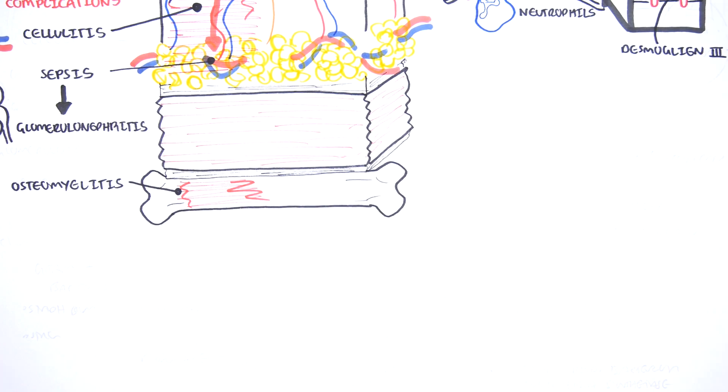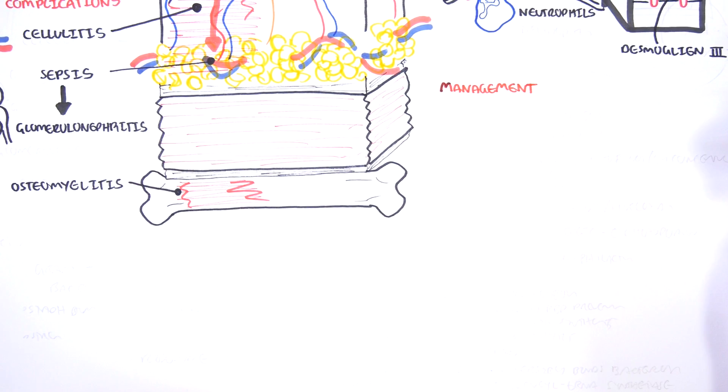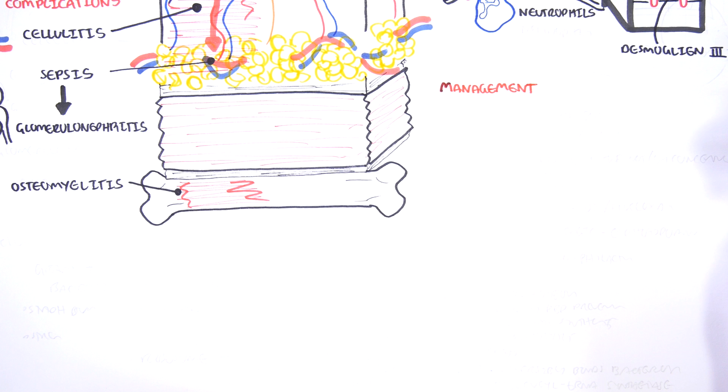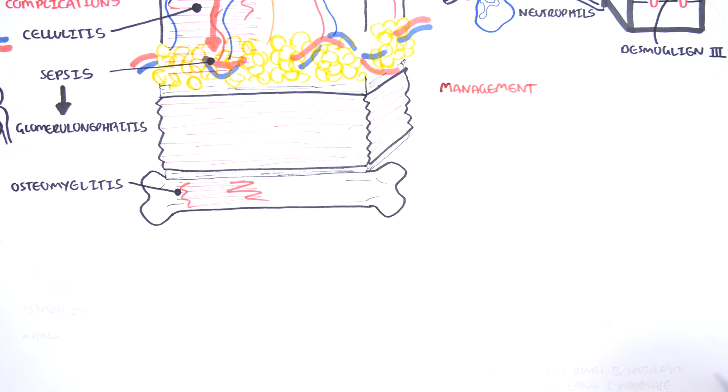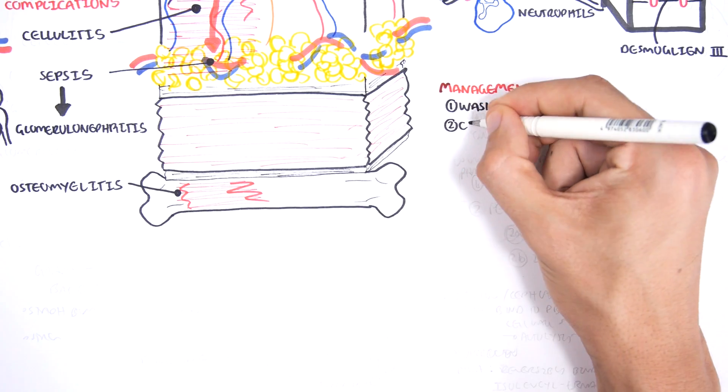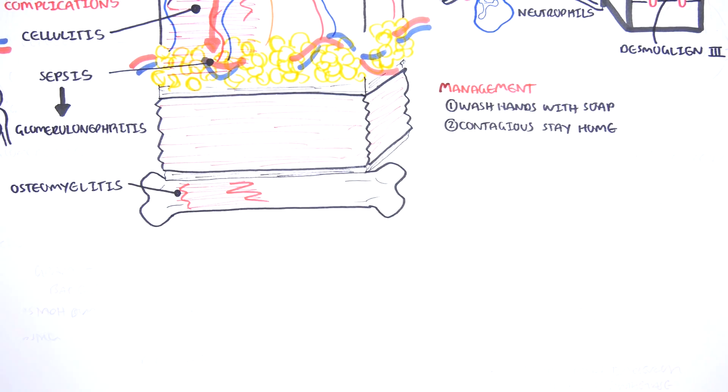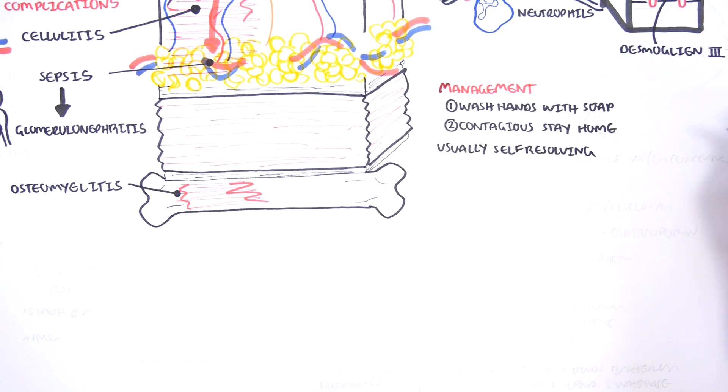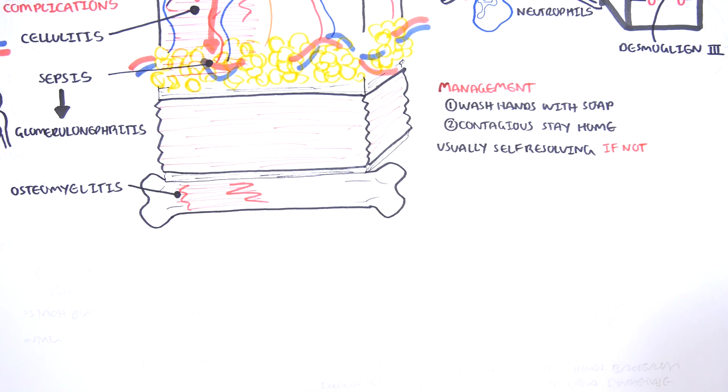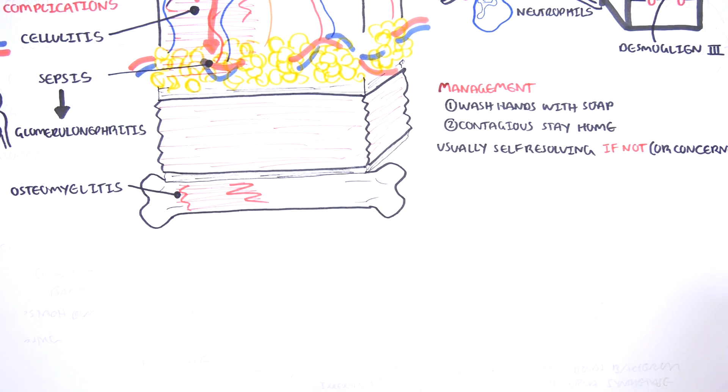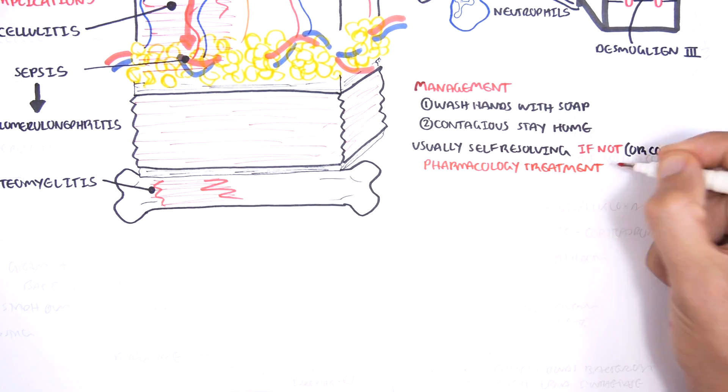The management of impetigo is twofold. One, because impetigo is contagious, it's important to wash hands with soap. And two, if the child goes to school, for example, it's probably a good idea to keep them at home. Usually, impetigo is self-resolving, and you don't need any pharmacological management.